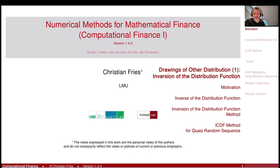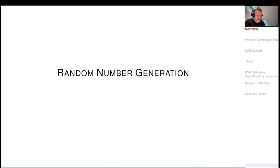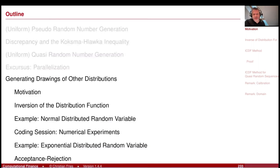Welcome to Numerical Methods. We are still in our section on random number generation, but now we move a little bit further. This is about generating drawings of other distributions. My section on random number generation was focused on uniform random numbers and Monte Carlo integration, so now we are moving back to the Monte Carlo method — approximating an expectation — and also we like to generate drawings of other distributions.